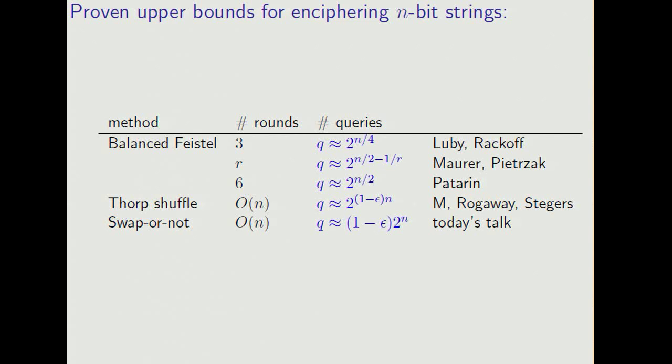For maximally unbalanced Feistel, also known as the Thorp shuffle, you can improve the exponent to 1 minus epsilon times n. Again, with swap-or-not, we can get security even if the adversary queries most of the domain.